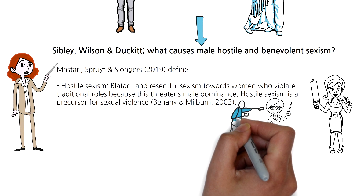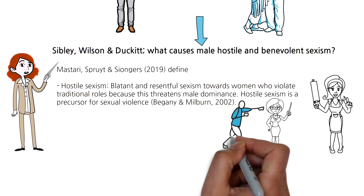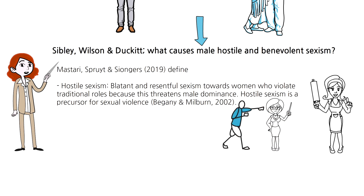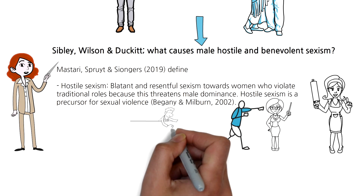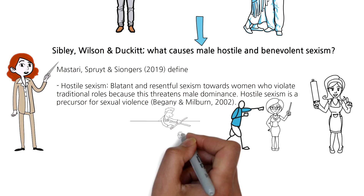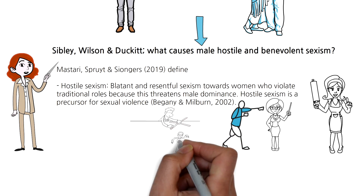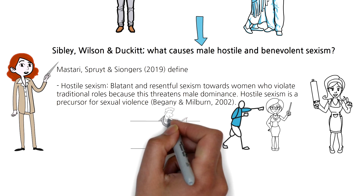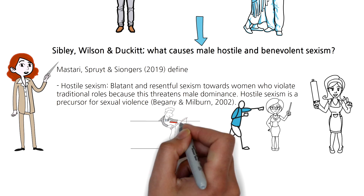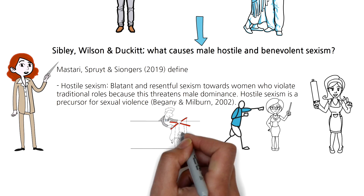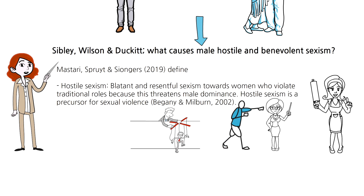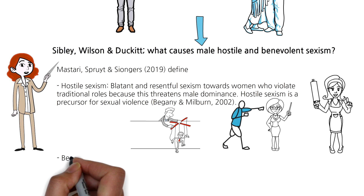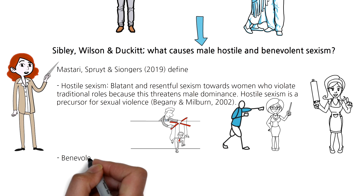An example of hostile sexism — trying to keep individuals who violate traditional gender stereotypes in their traditional role — would be teasing a boy who plays with dolls. This would be an expression of hostile sexism.